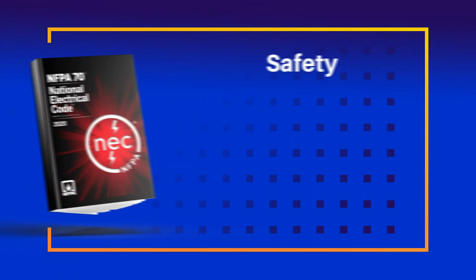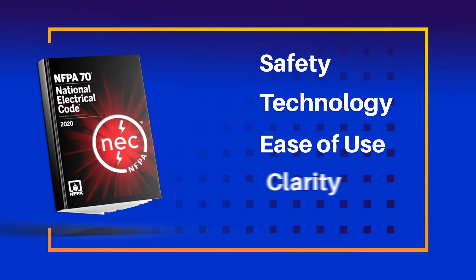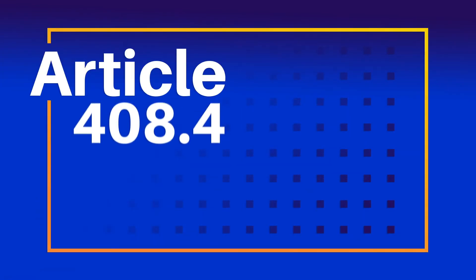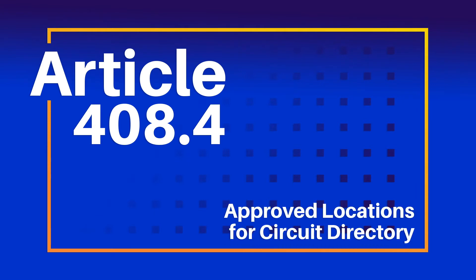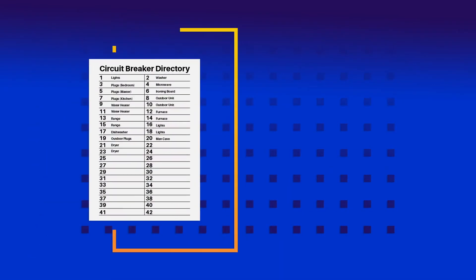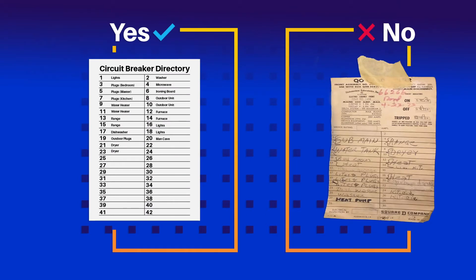Code changes happen for many different reasons, and sometimes it's hard to figure out what the intent of the change is. It might seem subtle when looking at the change made to 408.4 — approve locations for circuit directory for a panel board. But having an accurate and legible circuit directory for a panel board can not only save time, it also seriously improves safety.